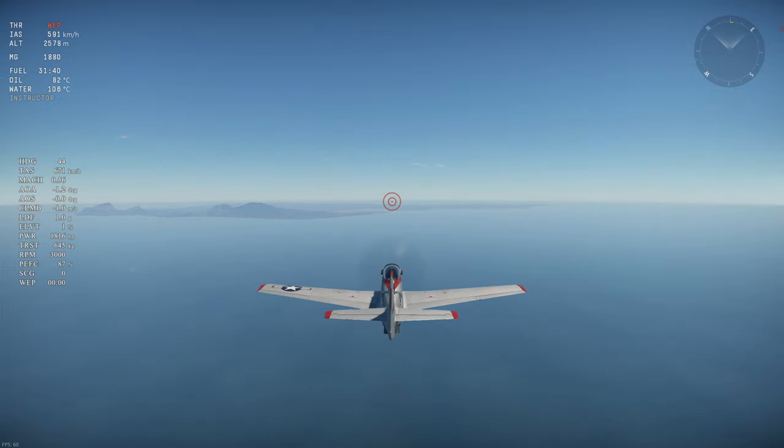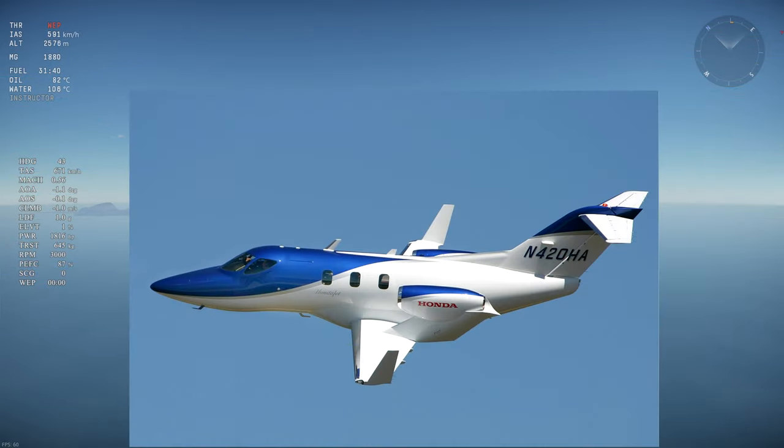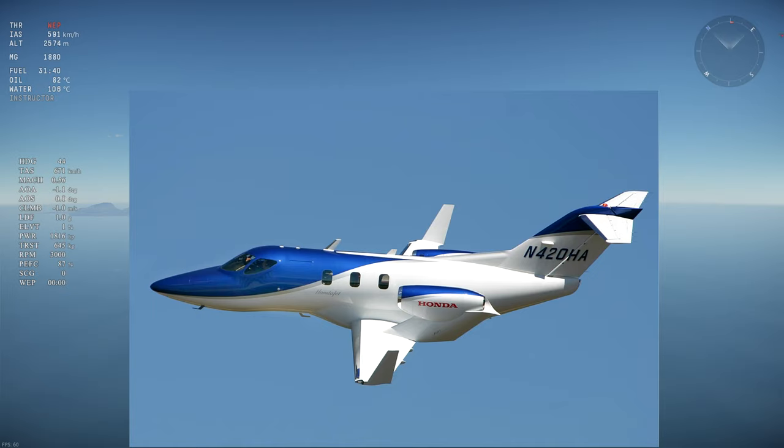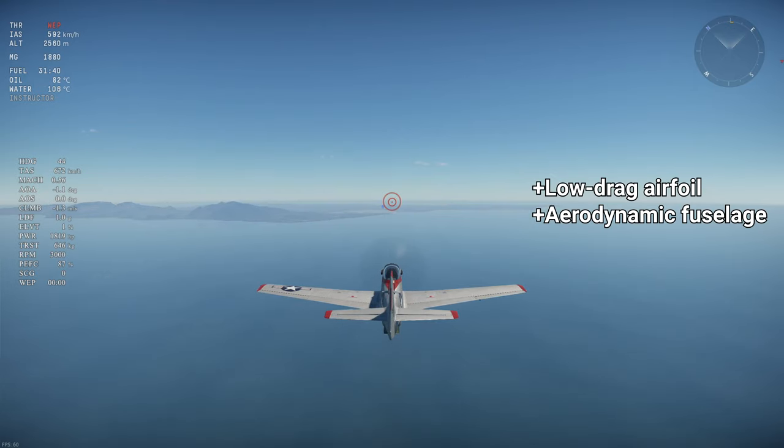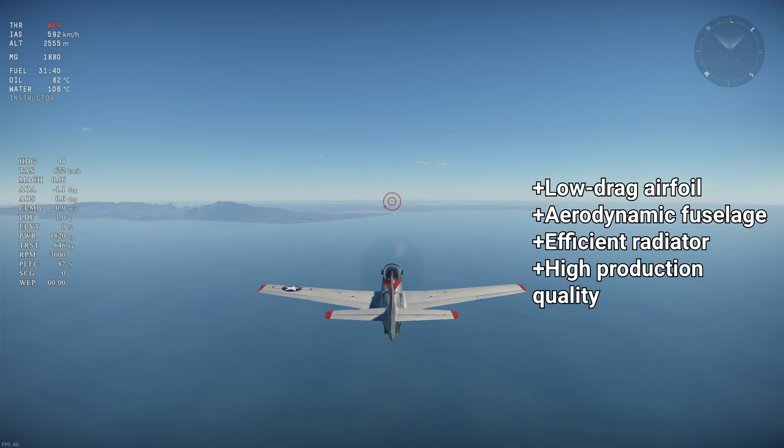The only aircraft I know of in service that uses laminar flow is the Honda Jet, so the use of laminar flow airfoils hasn't completely disappeared since the 1940s. All in all, the Mustang is still a low drag aircraft, but it's not because of its laminar flow airfoil. It's due to the combination of a low drag airfoil, aerodynamic fuselage, efficient radiator, and high quality production which reduces surface roughness and drag.